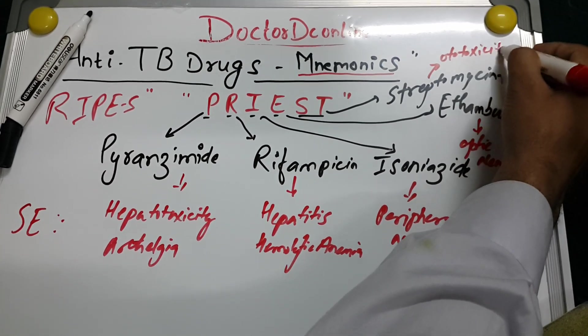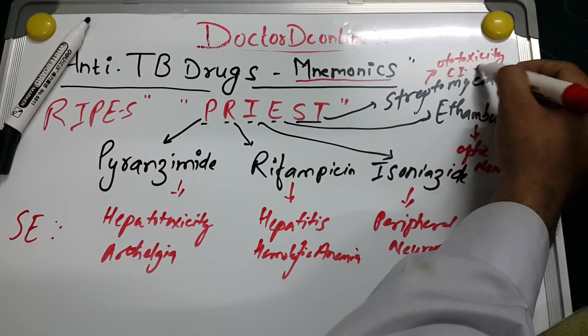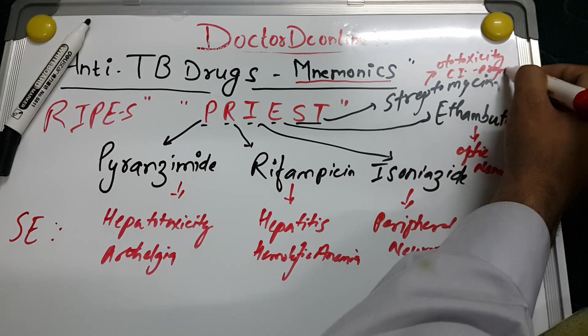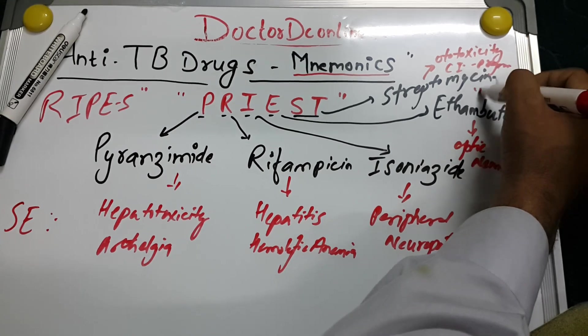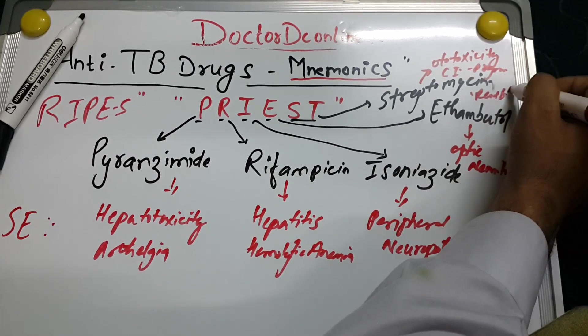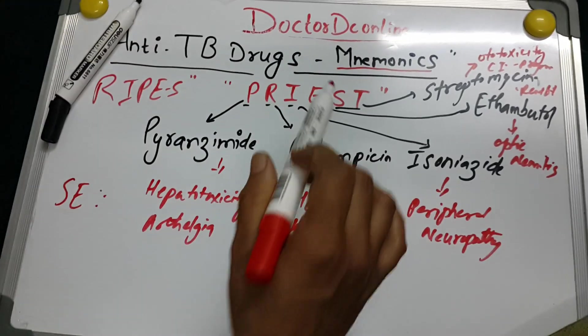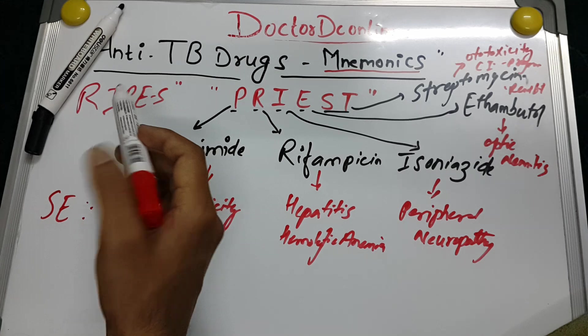Streptomycin causes ototoxicity, and it is contraindicated in pregnancy and renal failure.